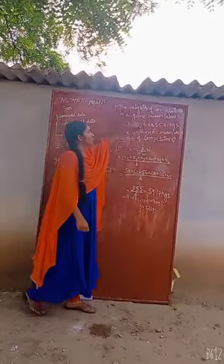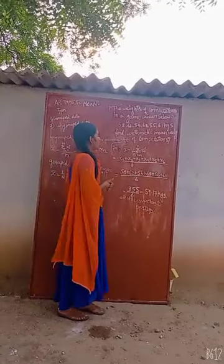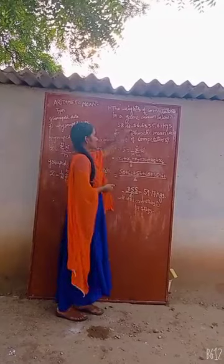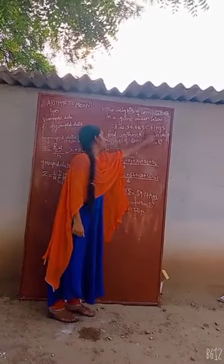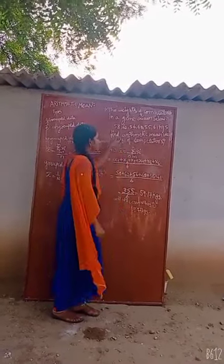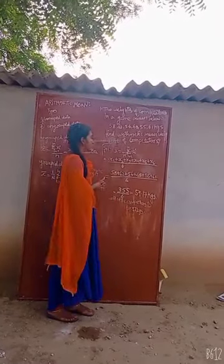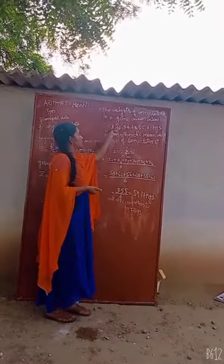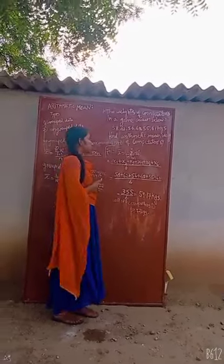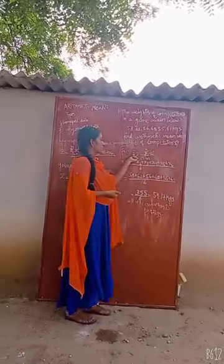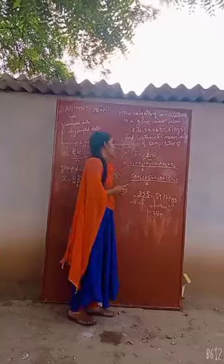Let's see the problem. The weights of competitors in a game are given below: 58, 62, 56, 63, 55, 61 kg. Find the arithmetic mean of the weight of the competitors. This is ungrouped data. The ungrouped data formula is x-bar equals 1 by n, summation from i=1 to n of xi.